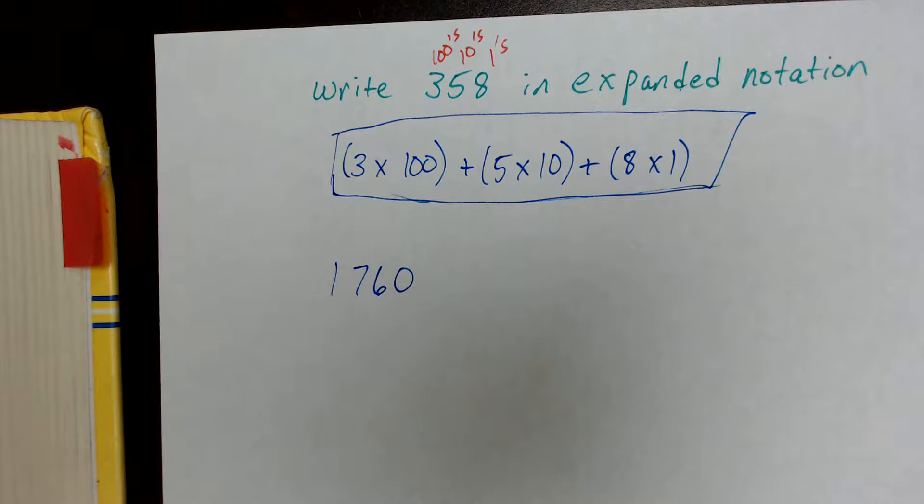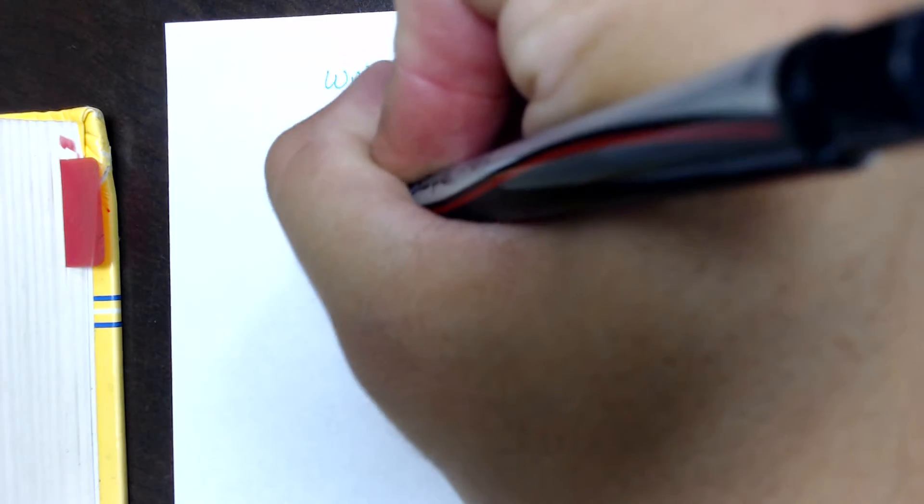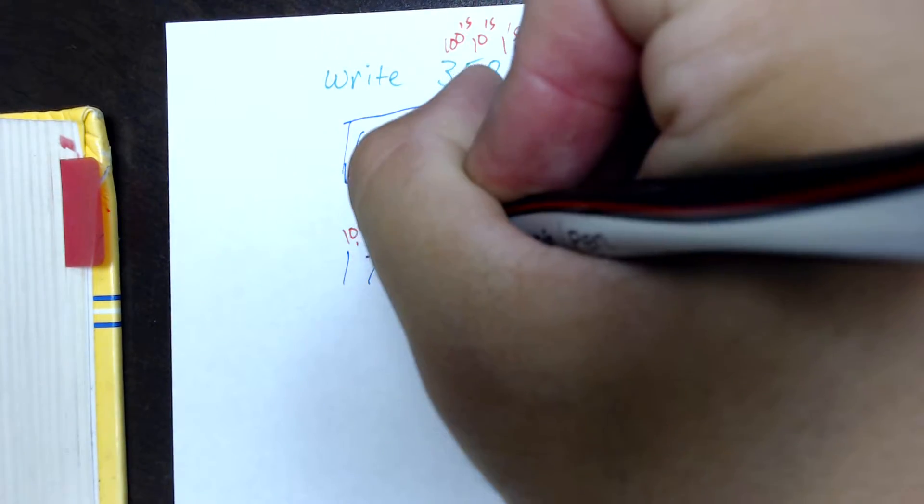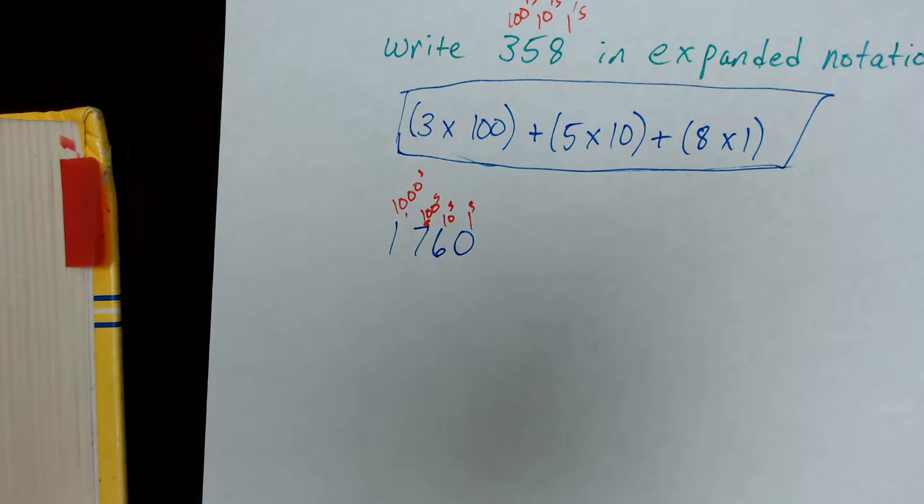And if it helps you, you can go ahead and put the place values over your numbers so you don't make any careless mistakes. So thousands, hundreds, tens, and ones.